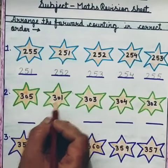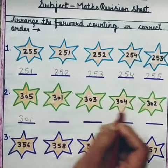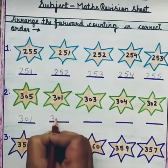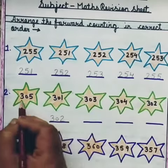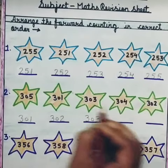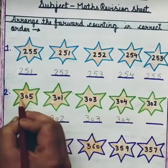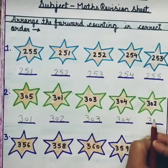So, first of all, 301 will come, then 302 will come, then 303 will come, then 304 will come, then 305 will come.